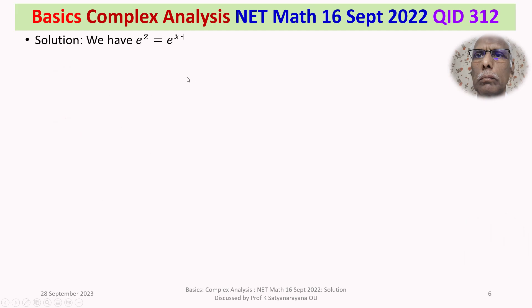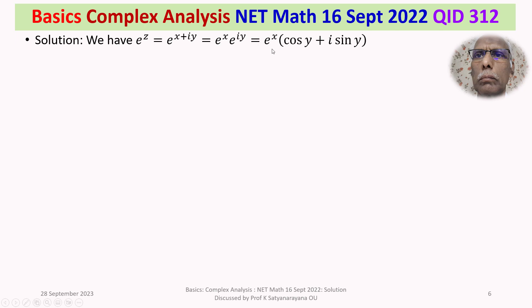We now discuss the solution in detail. We have e^z = e^(x+iy) where z = x + iy, that is e^x · e^(iy), which equals e^x · (cos y + i sin y).